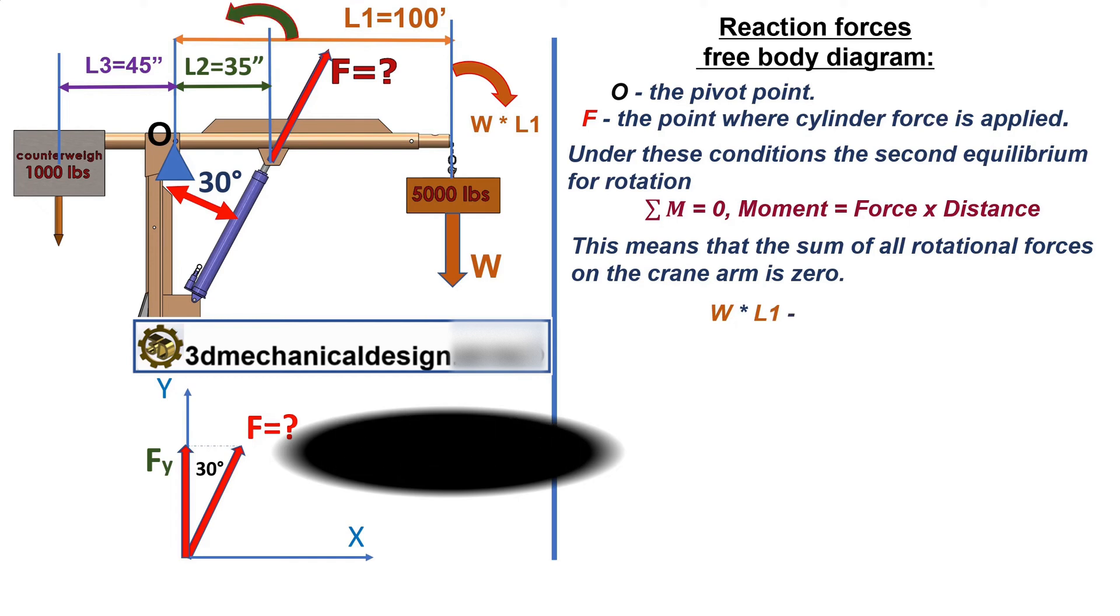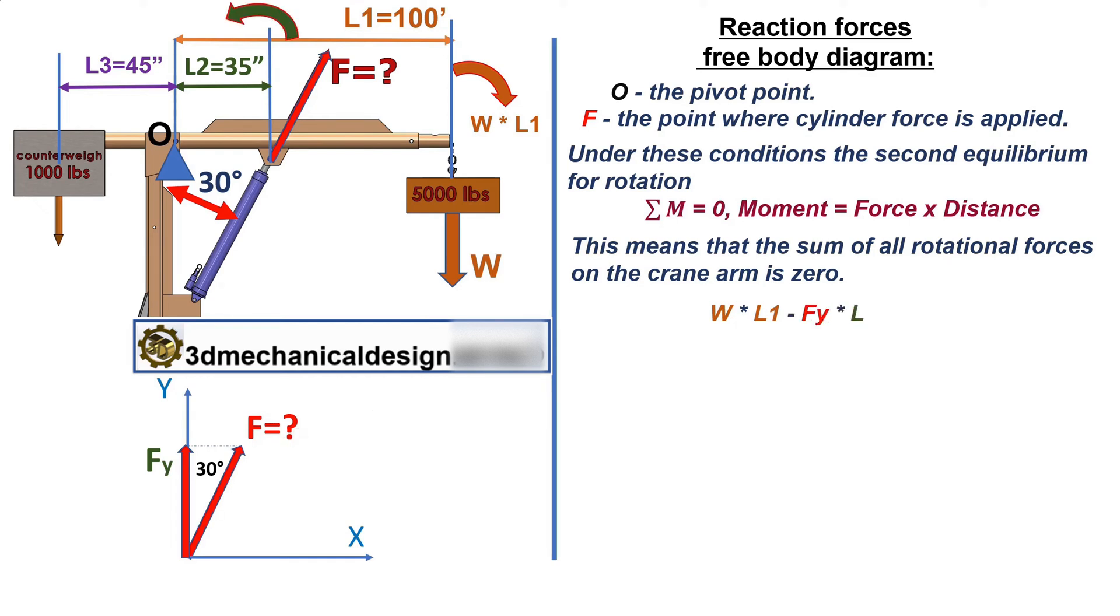W times L1 minus Fy times L2 minus CW times L3 equals 0.